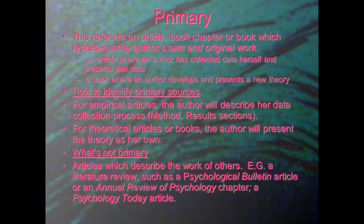Primary refers to an article, book, or chapter which represents the author's own and original work — cases where an author is presenting data they collected themselves, or a theory they developed themselves. You identify primary resources for empirical articles because the author will describe their own data collection process. Usually in psychology this means there is a methods and results section, so an easy way is to open the article and look for those sections.